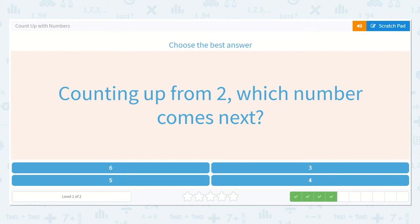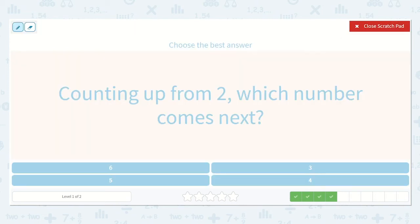All right, counting up from two, which number comes next? And something else we can do, if we start to feel confused, we could draw this many objects. So I'm going to draw two circles. Now when they say which number comes next, well, let me draw one more and then count them.